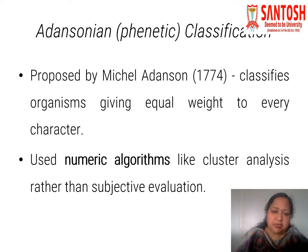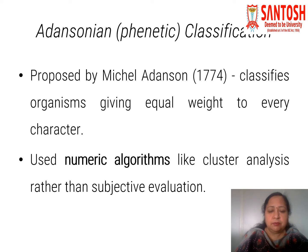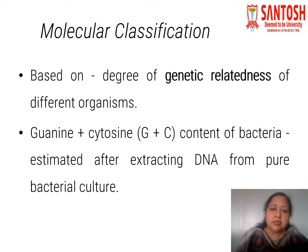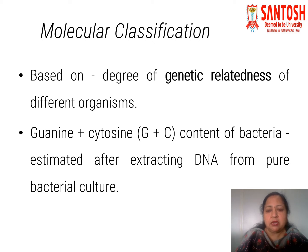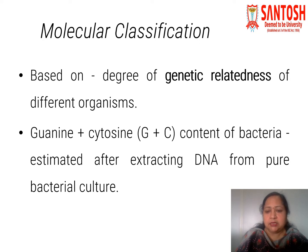The Adansonian or Phenetic classification is the second approach, proposed by Adanson in 1774. It classifies organisms giving equal weight to every character, and uses numeric algorithms like cluster analysis rather than subjective evaluation. The third classification is the molecular classification, based on the degree of genetic relatedness of different organisms, identified on the basis of guanine and cytosine content of the bacteria estimated after extracting DNA from pure bacterial culture.